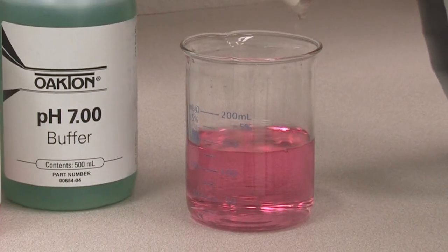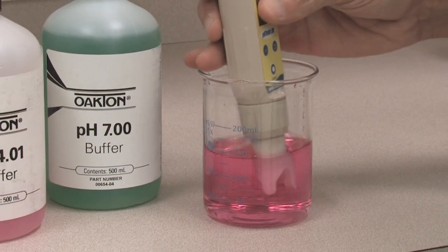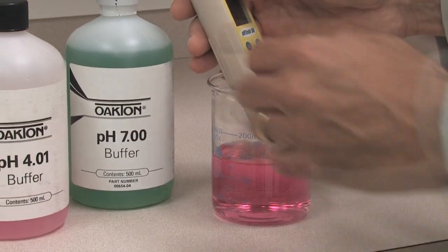Always check your tester by calibrating. If it calibrates to buffers, it can be used to take measurements. When it cannot be calibrated, even after attempts to condition or clean it, the pH sensor module must be replaced.